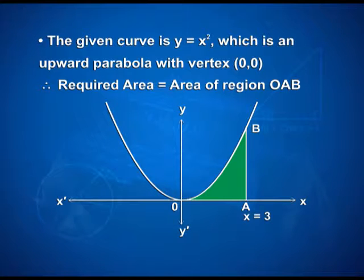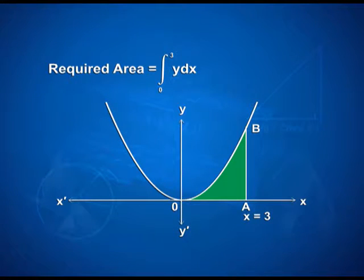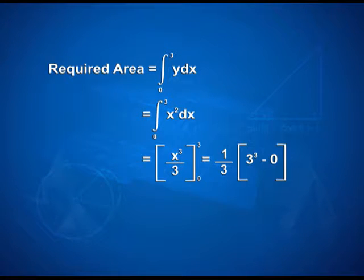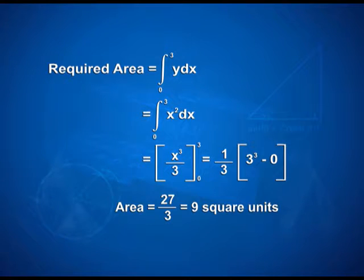The shaded area is to be calculated. Therefore, required area is equal to integral from 0 to 3 of y dx, that is equal to integral from 0 to 3 of x squared dx. On integrating, we have x cubed upon 3 with limits 0 and 3. On applying limits, we have 1/3 into (3 to the power 3 minus 0), that gives us 27/3 which is equal to 9 square units as the area.